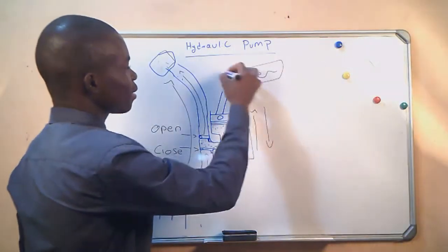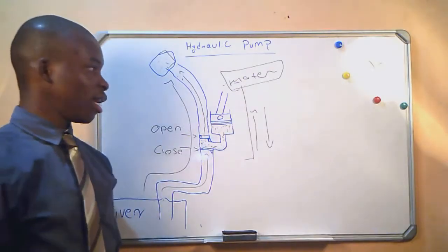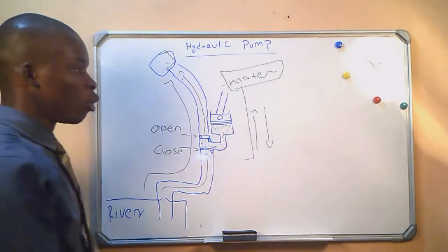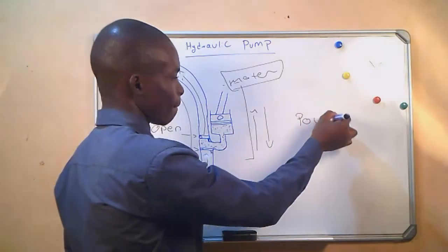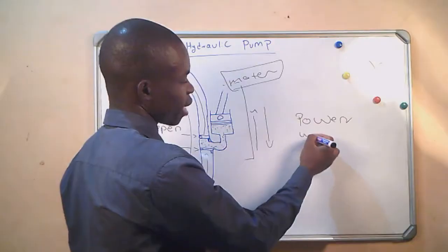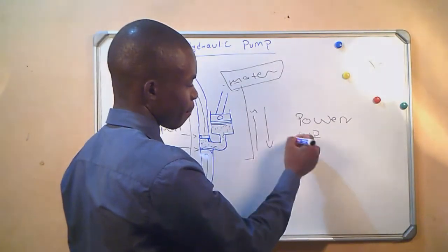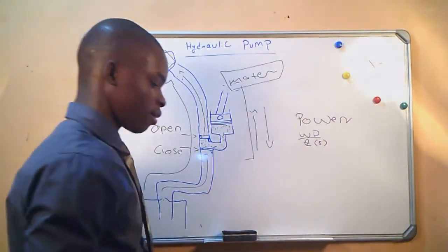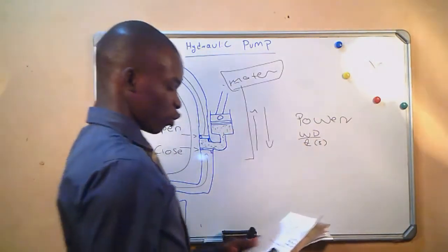Since we said the piston is powered by a motor, we will be required to calculate its power, which we know equals work done divided by time in seconds. And these are some of the formulas that we are going to use.